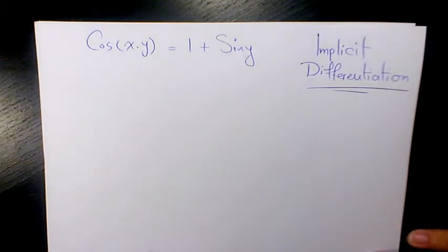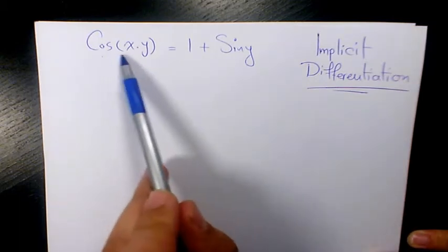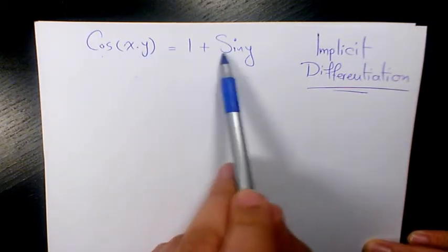What's up guys, this is Massey, welcome to another video. In this video I want to show you how to find the derivative of this expression using implicit differentiation. So we have cosine of x times y equals 1 plus sine y.